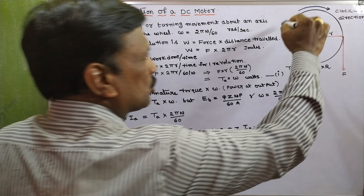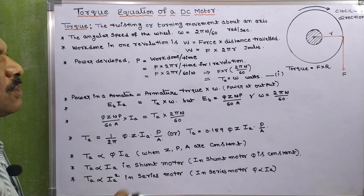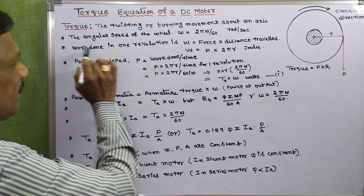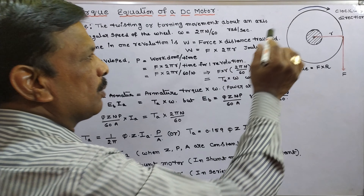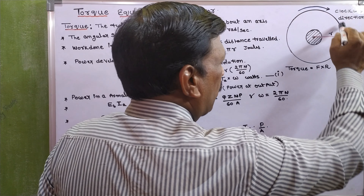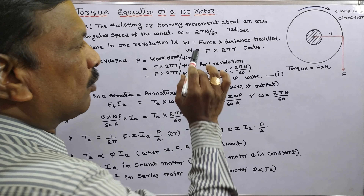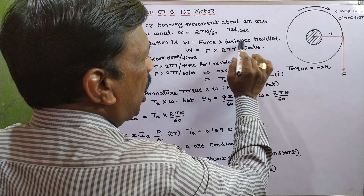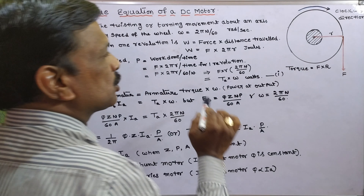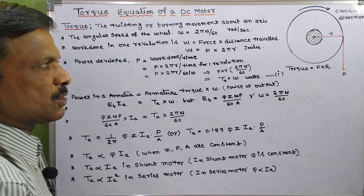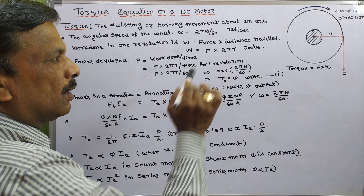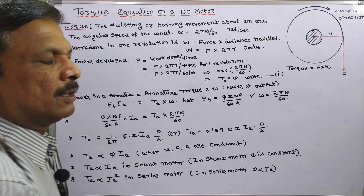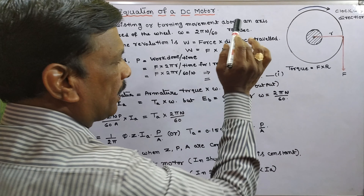The angular speed of a wheel is equal to 2πN/60 radians per second. Next, work done in one revolution is equal to force into distance travelled — that is, angular force into the distance travelled in one revolution. So work done W equals force into the circumference of the circle, which is 2πr. Therefore, work done equals force into 2πr joules.